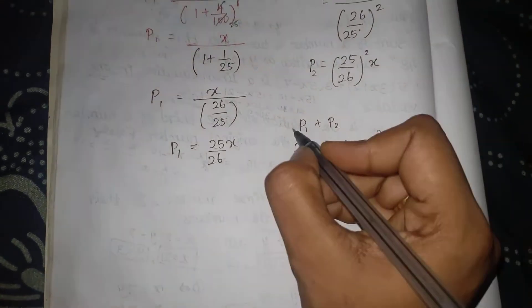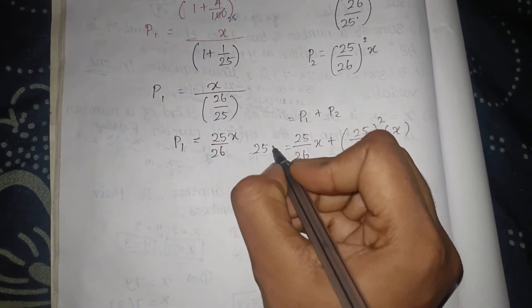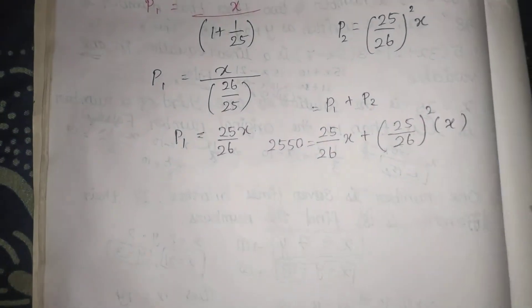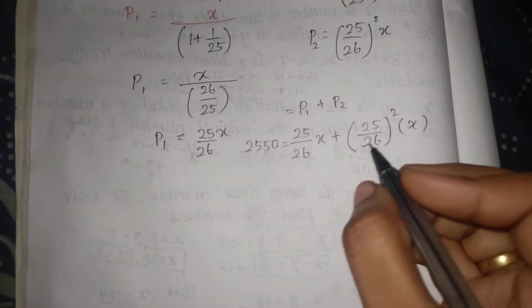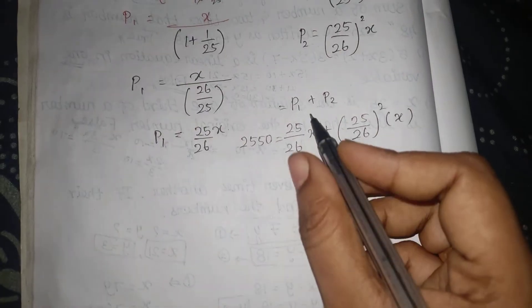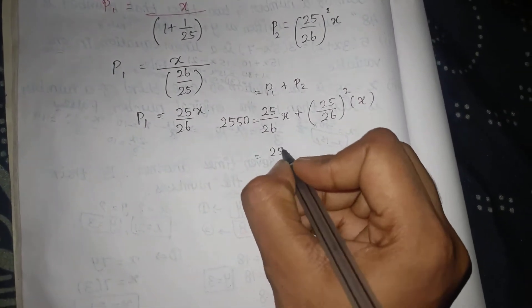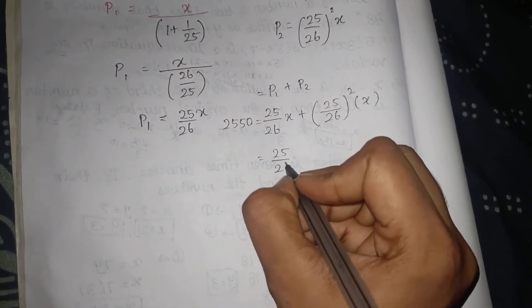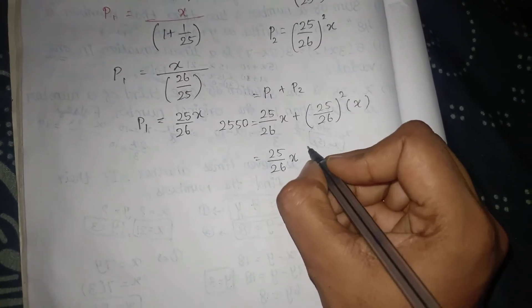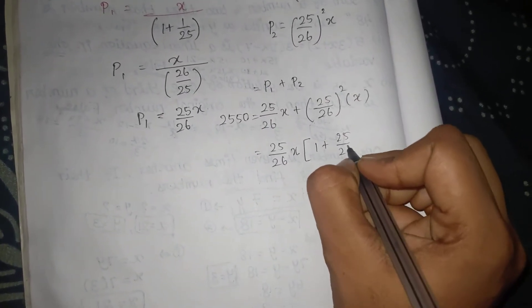Now we add P1 and P2. P1 is 25x/26 and P2 is (25/26)² × x, and their sum equals 2550. Taking out the common factor: 25x/26 into (1 + 25/26).